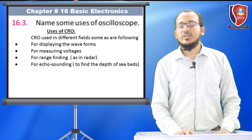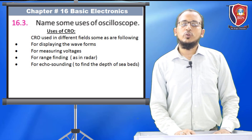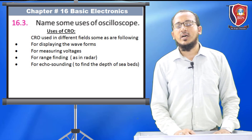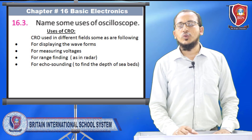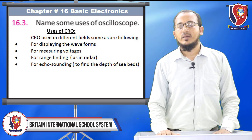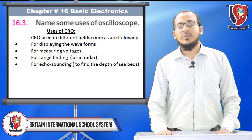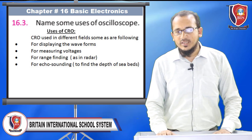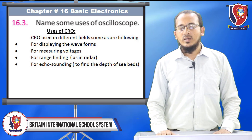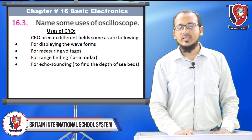Question number three: Name some uses of the oscilloscope. The CRO is used in different fields: for displaying waveforms, for measuring voltage, for range finding as in radar, and for echo sounding to find the depth of sea beds.